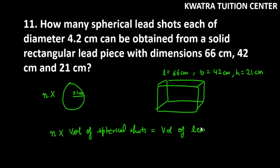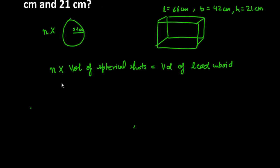Now you have to apply the formula of cuboid and spherical shots. We have n into volume of spherical shots, which is 4 by 3 pi r cube, equals L times B times H.